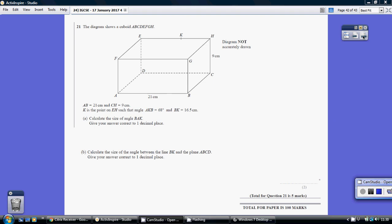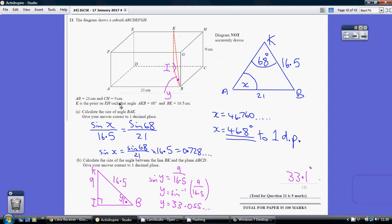Question 21. Now we're being asked to work out the size of the angle B, A, K. OK, B to A to K. So let's just hook out that triangle over here, making it two dimensional, the triangle B to A to K.